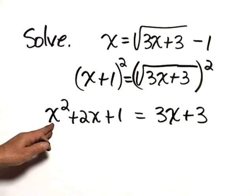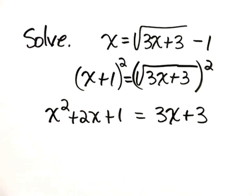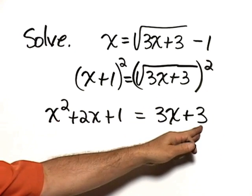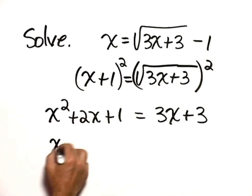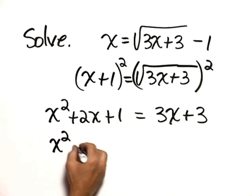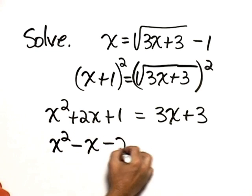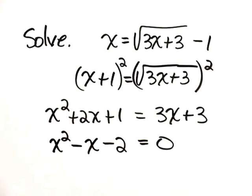Since this is a quadratic equation, we wish to subtract 3x and subtract 3 from both sides so that we have 0 on the right-hand side. That result would be x squared minus x minus 2 equals 0.